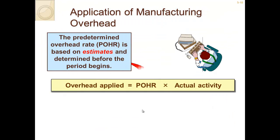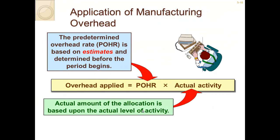The applied overhead rate works as follows: first, estimate a predetermined rate — for example, $8 per labor hour for manufacturing overhead. When estimating the cost of a project to decide whether to bid, you apply this predetermined rate. Then, when actually completing the job, you take the predetermined overhead rate (POHR) times the actual activity. Originally you estimated activity, but once the job is complete you know the actual activity.